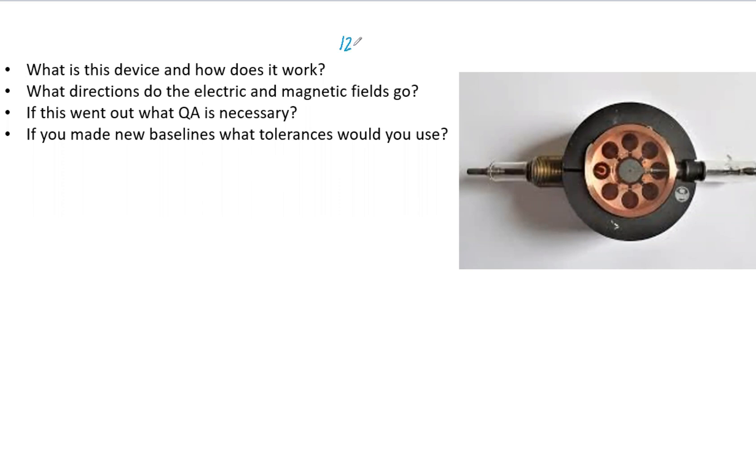Those are the advantages and disadvantages. You have to have a magnetron or a klystron. Elekta machines typically have magnetrons, and Varian machines have klystrons. So what directions do the electric and magnetic fields go?